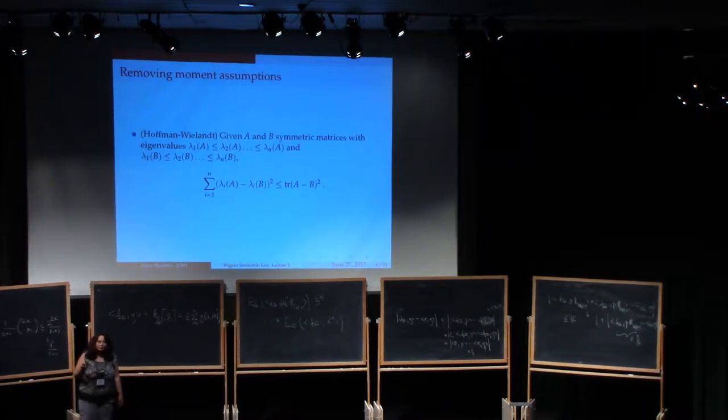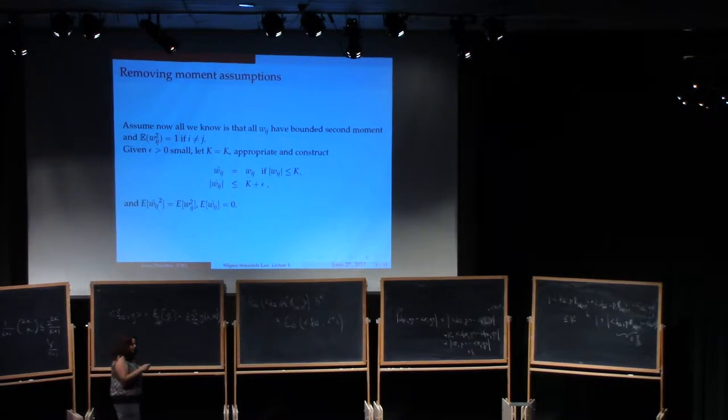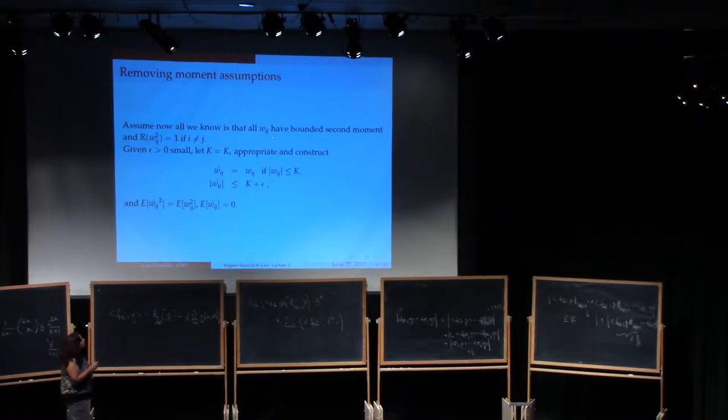So this is the Hoffman-Wielandt theorem. I'll be happy to tell you how to prove it after the lecture. If you already know how to prove it, good for you. I like it when people know linear algebra facts. So that's going to be our tool. Now I promised that I am going to remove the moment condition on the variables. To do so, essentially, I'm going to do the following thing.